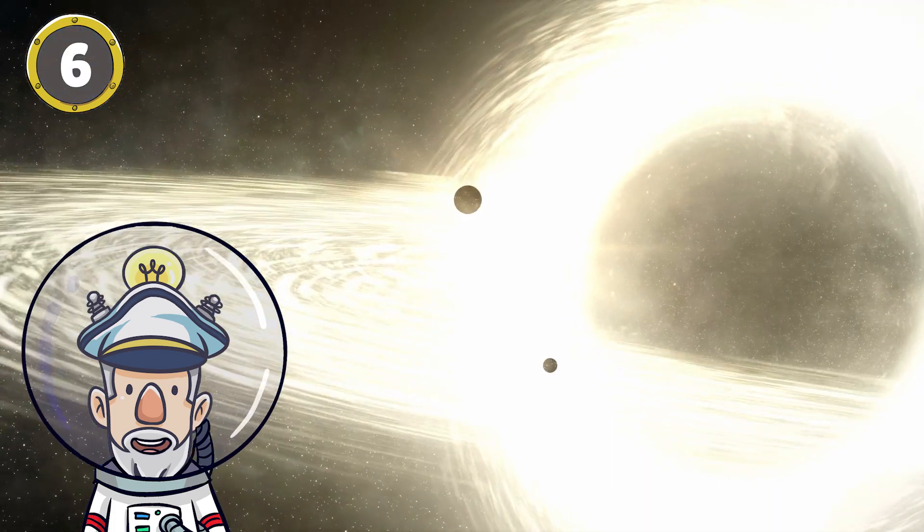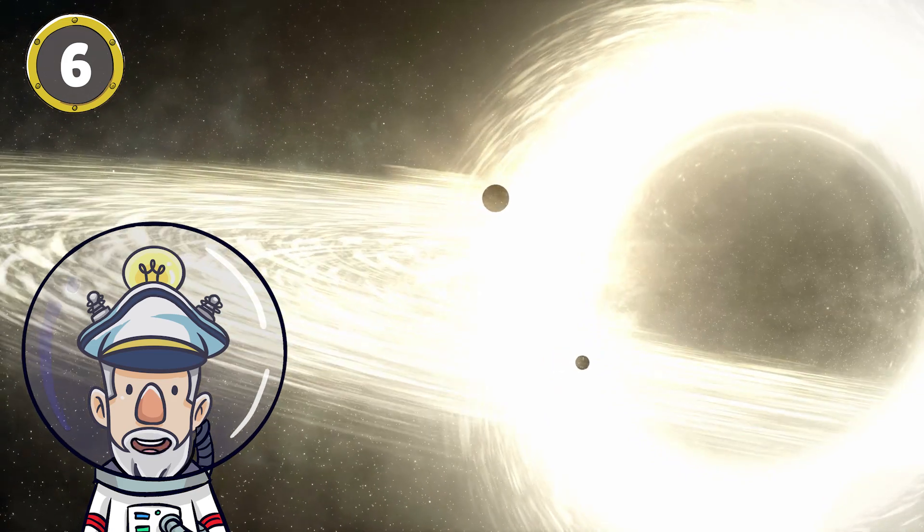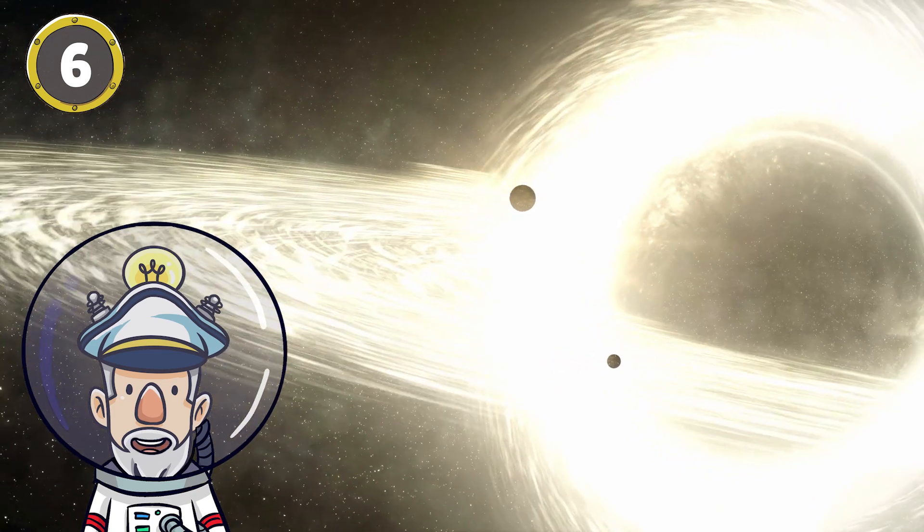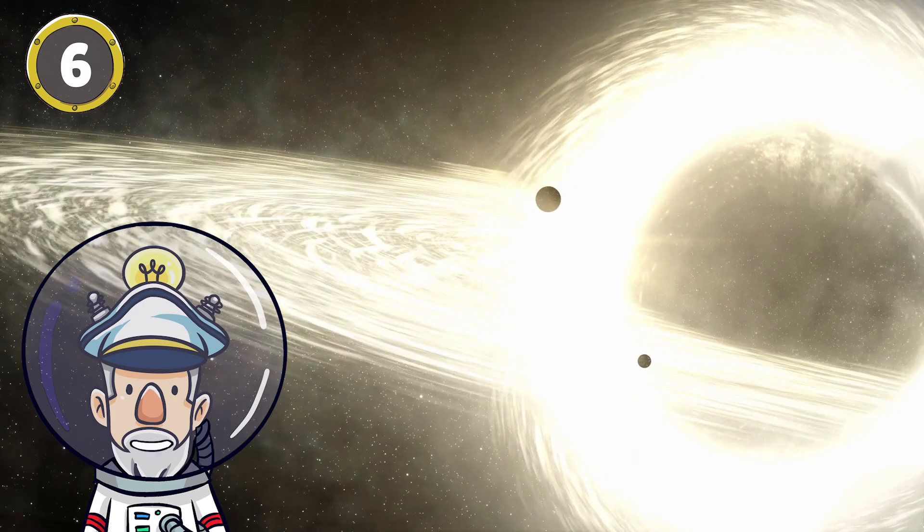Number 6: It's impossible to see any event taking place after a point in the black hole called the event horizon.